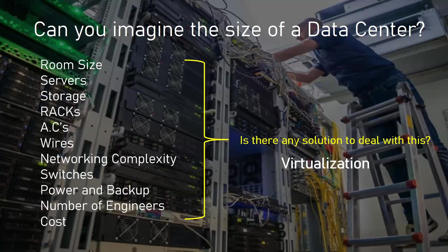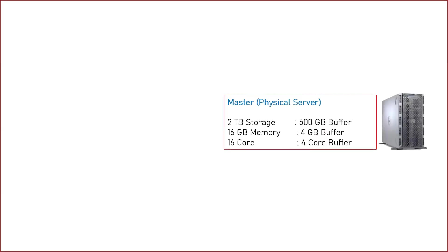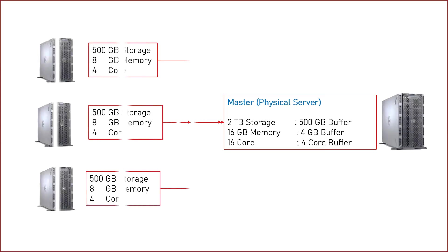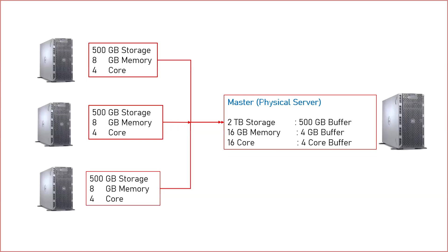For that, you have the technology of virtualization along with cloud computing. What exactly do we do in virtualization? Here is one example: I have a big physical machine with large storage — say two terabytes of storage, 16 GB of memory, and 16 cores. From that one physical machine, I can create three virtual machines — three different machines — which I am calling virtual machines, and I will clarify this in the next few slides.